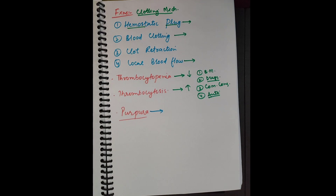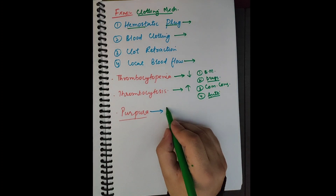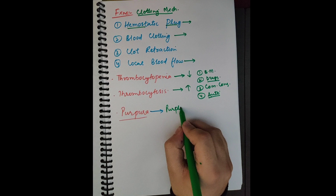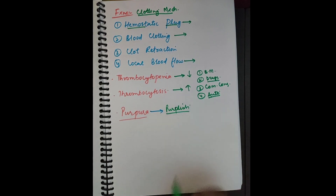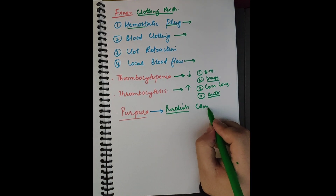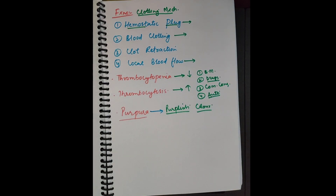If platelets are less in the blood, it results in bleeding tendencies. One manifestation is purpura — a purplish-blue discoloration of the skin. Whenever there is bleeding from a vessel under the skin, you will see small pinpoint purplish discolorations. This happens because platelets are fewer, blood vessels rupture under the skin, and the blood causes a purplish color known as purpura.